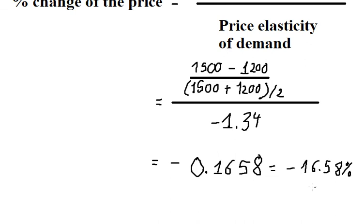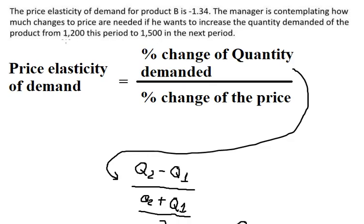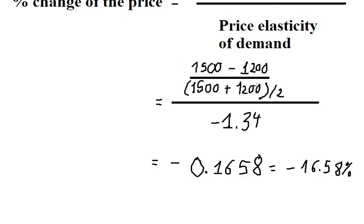Or we can put -16.58%. That means we need to reduce the price by 16.58% so that the quantity will change from 1,200 to 1,500. And that is the final answer we need to find.